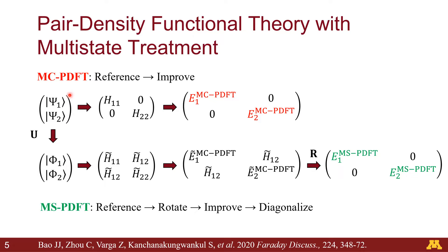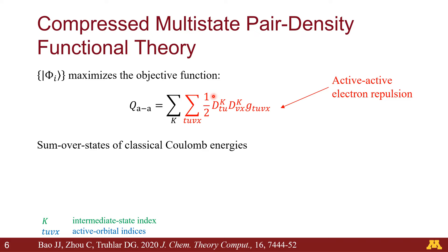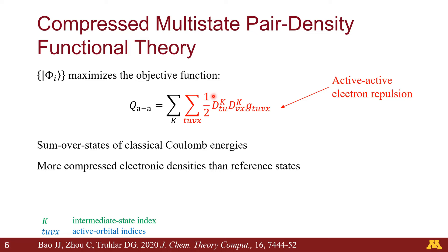To solve this problem, we have proposed several multi-state schemes. The method I'm going to talk about today is the Compressed Multi-State PDFT, or CMS-PDFT. In this scheme, the intermediate states maximize the sum over states of the classical Coulomb energy. Because the Coulomb energies are maximized, the electronic densities are more compressed — which is why we call it Compressed Multi-State PDFT.